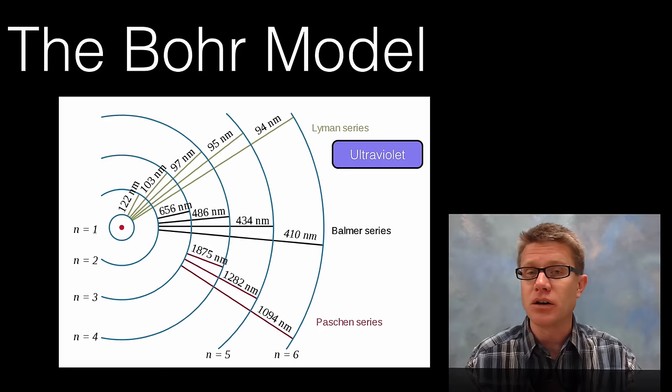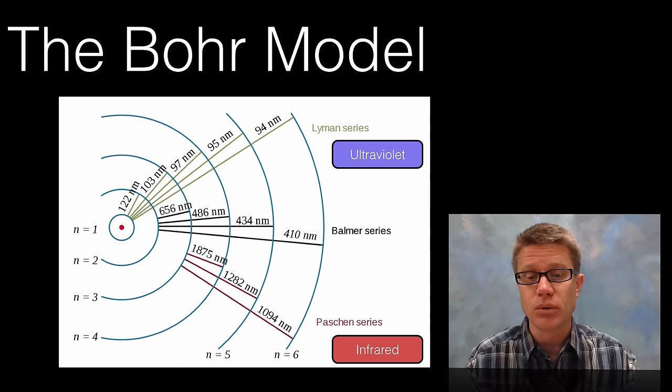So the Lyman series was developed by one scientist who was using spectroscopy. And he came up with an equation that explained what was going on. But you couldn't see this spectra because it was in the ultraviolet. We also saw the Paschen series that was showing the similar relationship. But this was in the infrared. And the Balmer series was seeing the same thing.